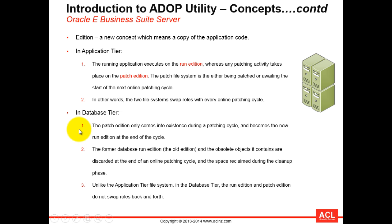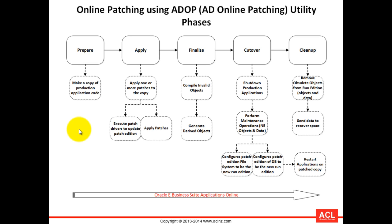Now that we understand the ADOP utility concept, let's look at the complete ADOP patching lifecycle. It consists of five major steps: preparation, application of patches, finalization, cutover, and cleanup. In the prepare phase, the system makes a copy from the run file system into the patch file system. In the apply phase, ADOP starts applying one or more patches by executing the patch driver files onto the application tier or database tier.